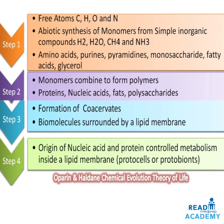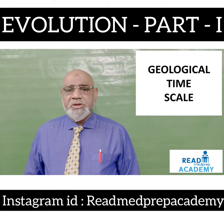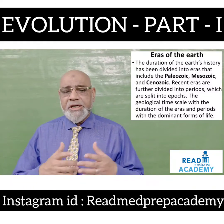Here you can see the formation of life forms. In step one, free atoms of carbon, hydrogen, oxygen, and nitrogen were present; abiotic synthesis of monomers from simple inorganic compounds like hydrogen, water, methane, and ammonia produced amino acids, purines, pyrimidines, monosaccharides, fatty acids, and glycerols. In step two, monomers combined to form polymers like proteins, nucleic acids, fats, and polysaccharides. In step three, formation of coacervates and biomolecules surrounded by a lipid membrane occurred. In step four, the origin of nucleic acid and protein-controlled metabolism inside a lipid membrane produced the protocells or protobionts. This is the Oparin-Haldane chemical evolution theory of life.